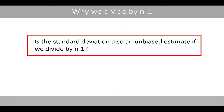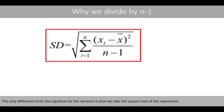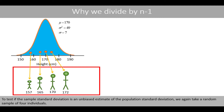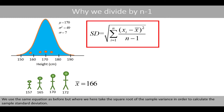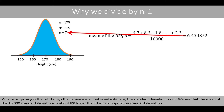So, is the standard deviation also an unbiased estimate if we divide by n minus 1? Remember that the sample standard deviation is the square root of the sample variance. The only difference from the variance equation is that we take the square root of the expression. To test if the sample standard deviation is an unbiased estimate of the population standard deviation, we again take a random sample of four individuals and use the same equation, but take the square root of the sample variance to calculate the sample standard deviation. If we repeat this process 10,000 times, we will have 10,000 estimates of the sample standard deviation.